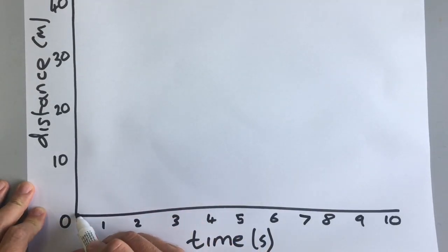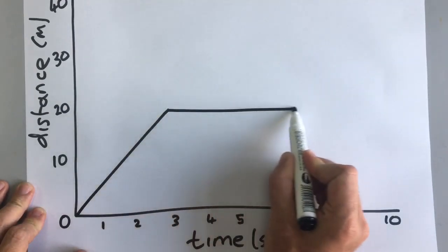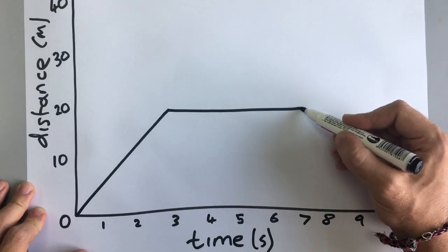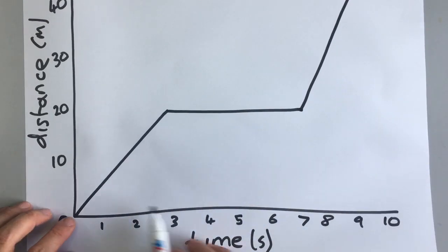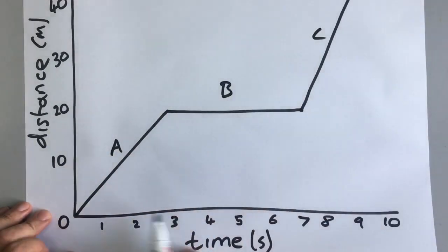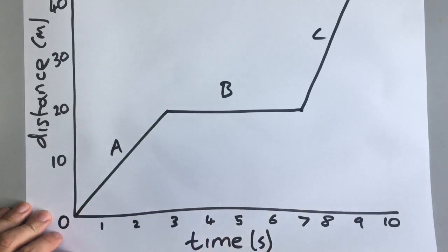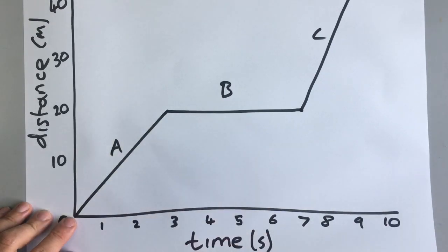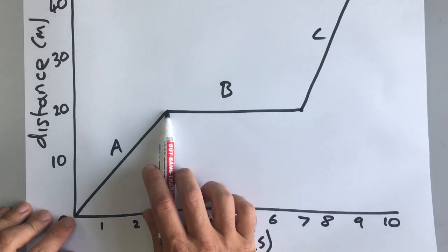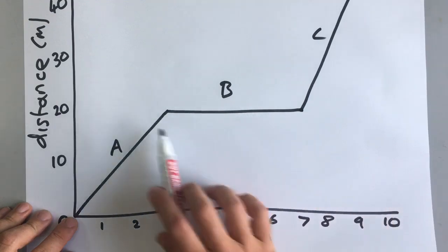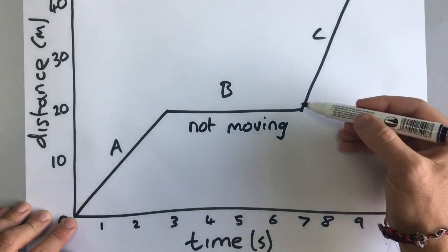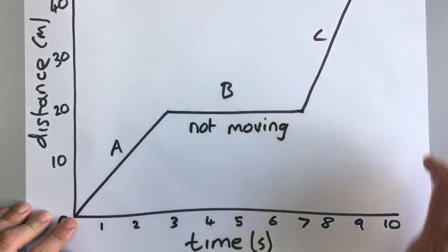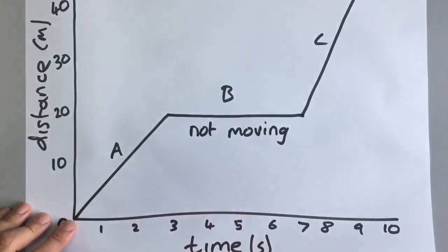If we have a journey that looks something like this, in the first section — let's call it A — someone has travelled twenty meters in three seconds. In section B, he's gone from twenty meters away to twenty meters away from where he started, so he's not moving at all. In section C, he's taken two seconds to go twenty meters, from seven to nine seconds. So he's moving faster than he did in A.